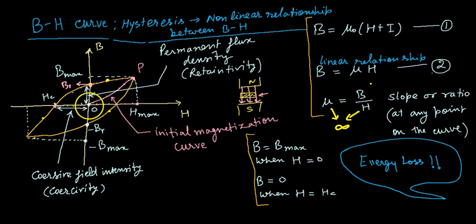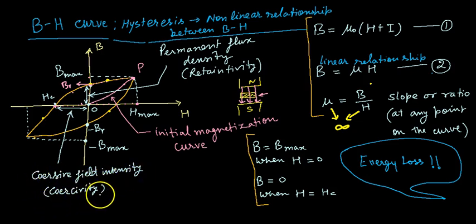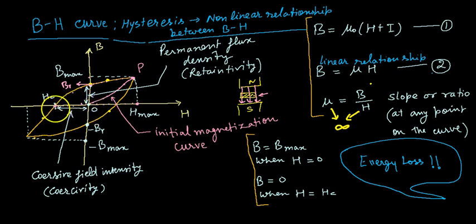When I go in the opposite direction of the applied magnetic field intensity, I observe at point C that B becomes zero. This particular value of external magnetic field intensity required to bring B to zero is known as the coercive field intensity, or simply coercivity. So from the BH curve we get two key terms: retentivity and coercivity.